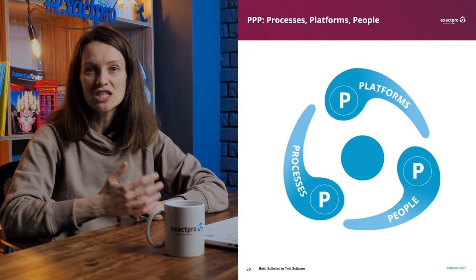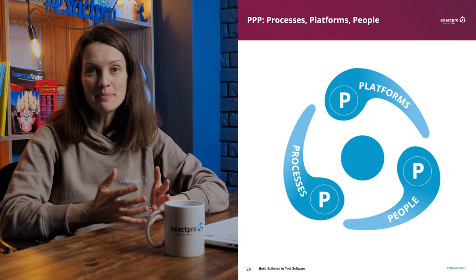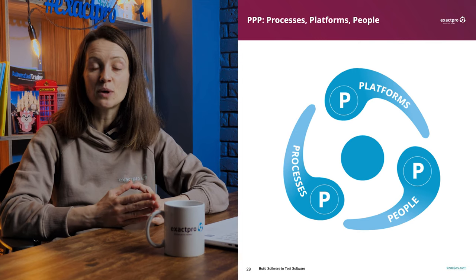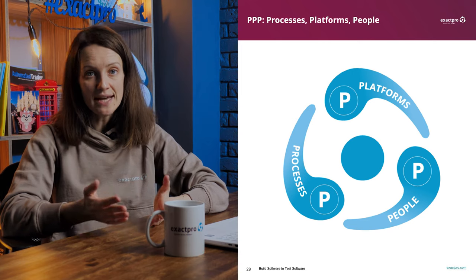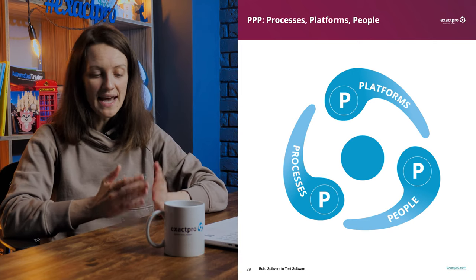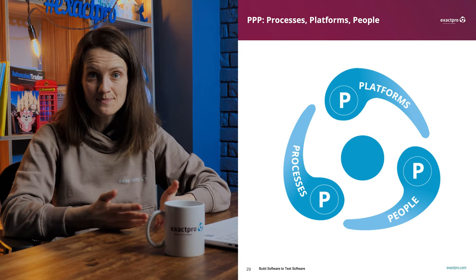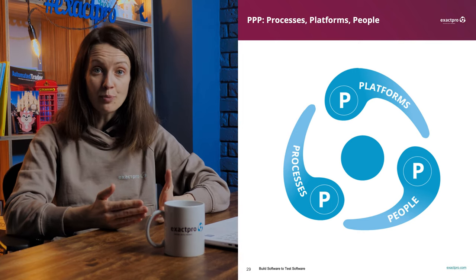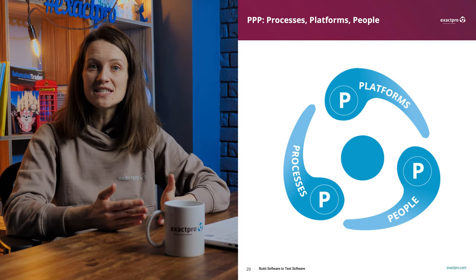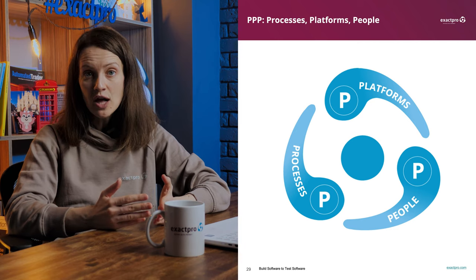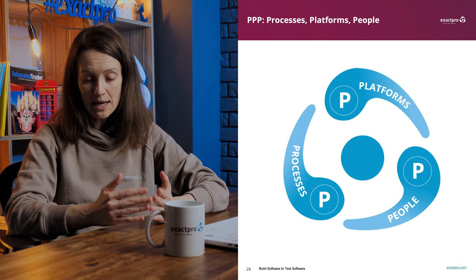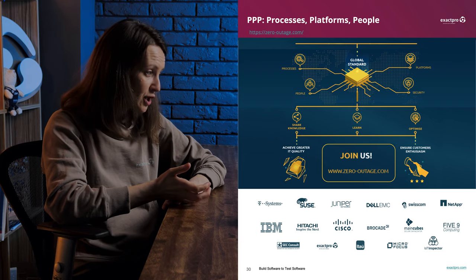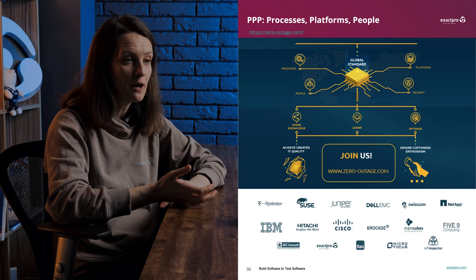Before discussing API types — the three Ps standing for private, partner, and public — we'd like to share the 3P concept on which the Exactpro business is based. In our case, the 3Ps stand for processes, platforms, and people. We build software to test client software, always ensuring the complexity of our platforms matches the complexity of platforms under test. Our processes have been fine-tuned for years, and our highly skilled people are the only ones who can support these processes and platforms. These three pillars are also used in the zero outage industry standard as building blocks of successful high-availability development and testing.